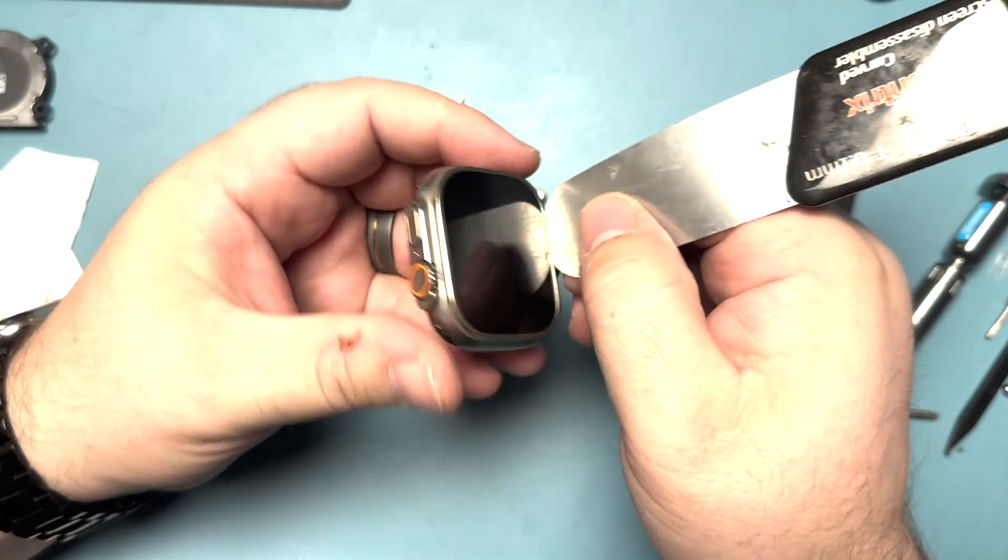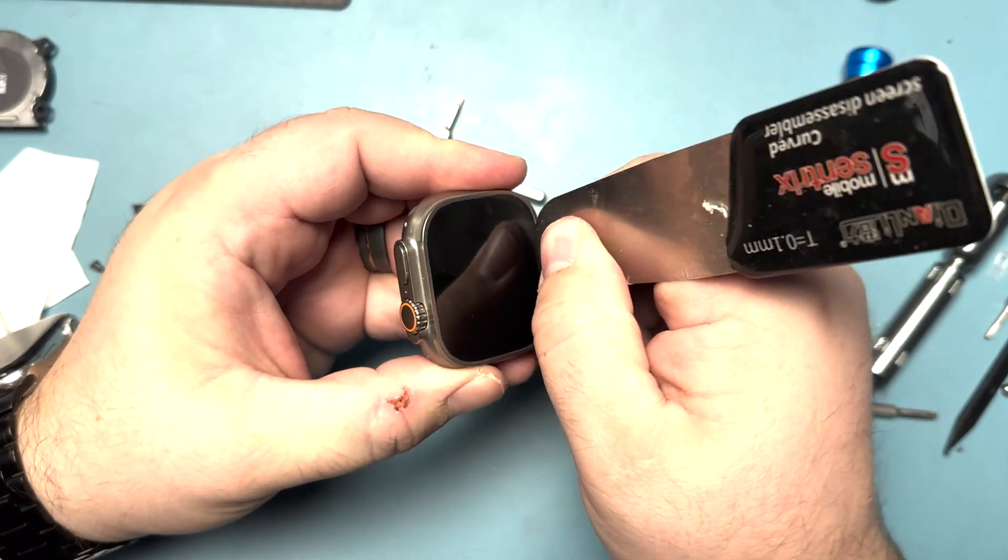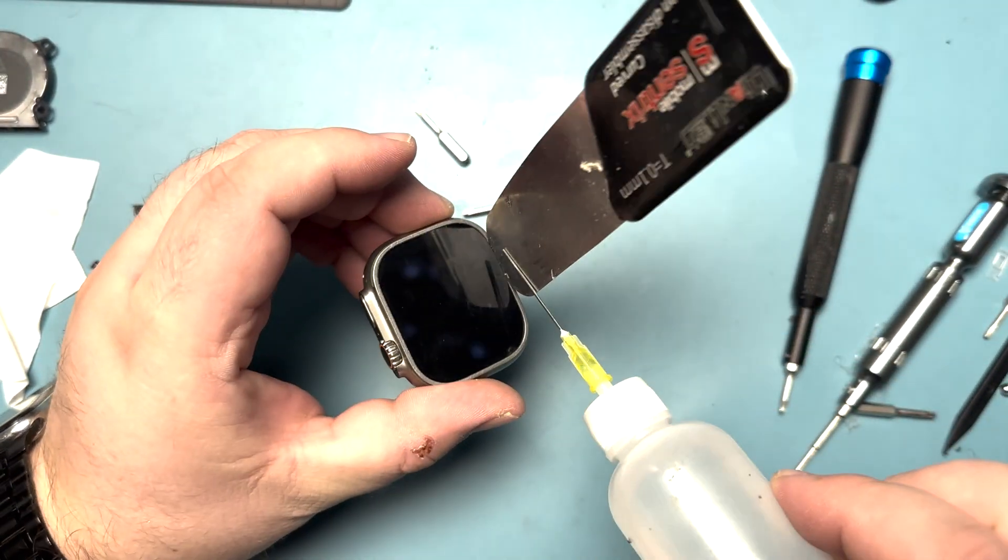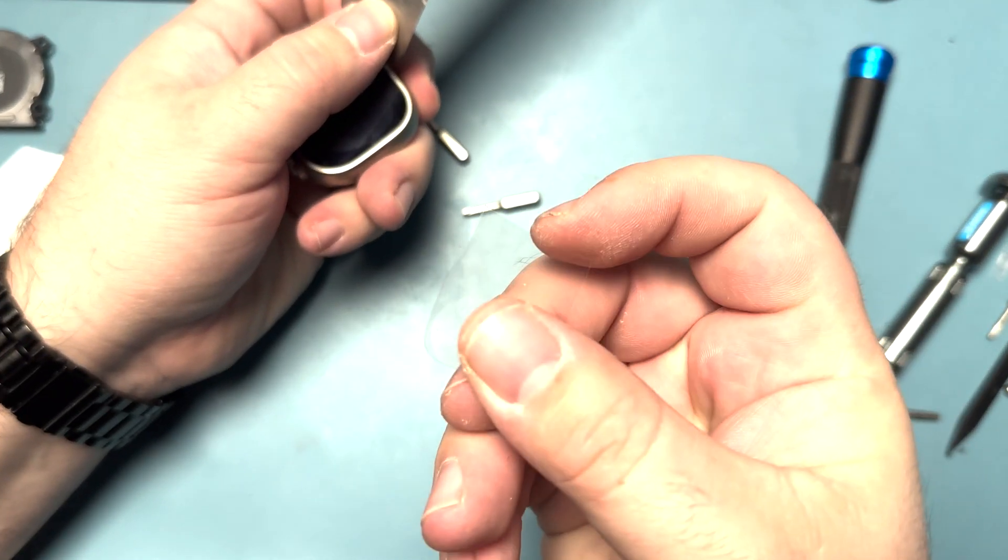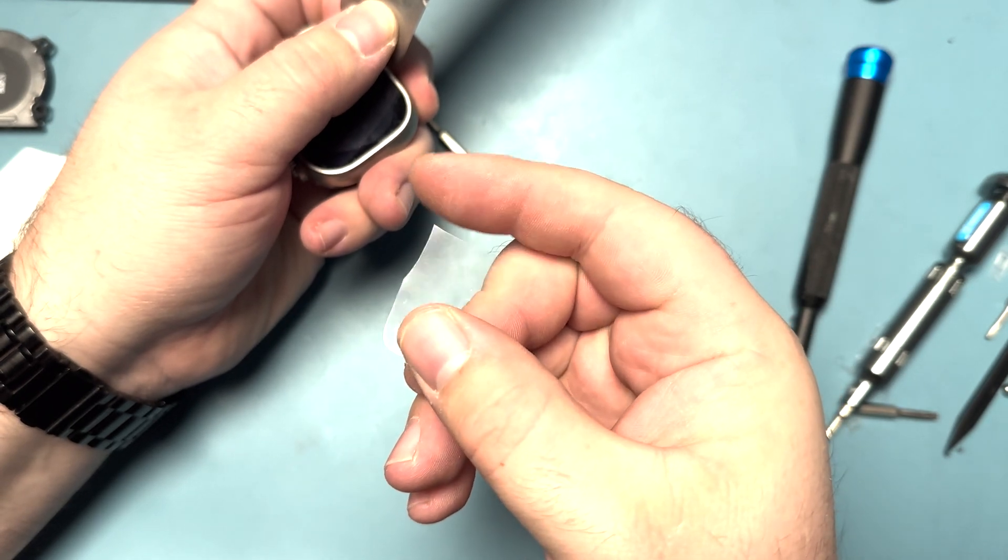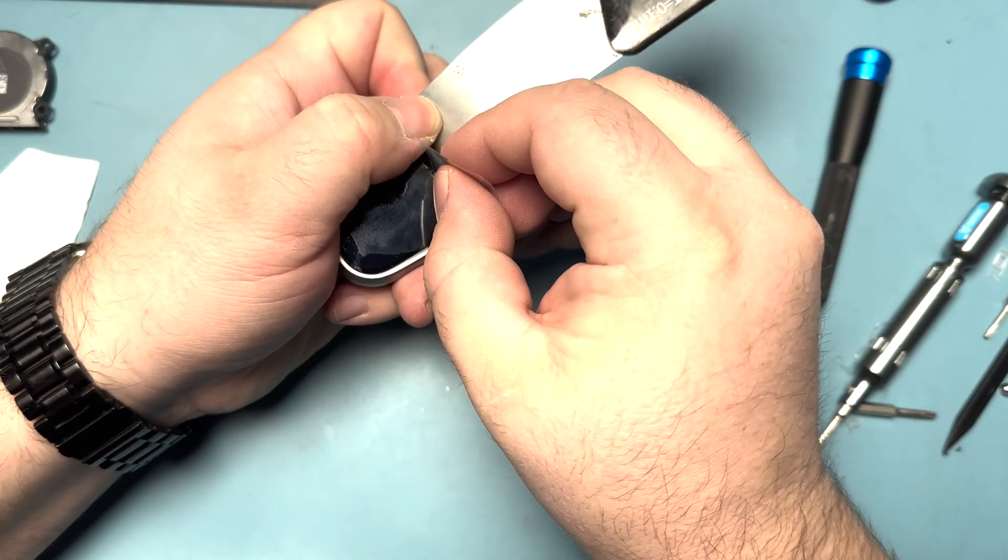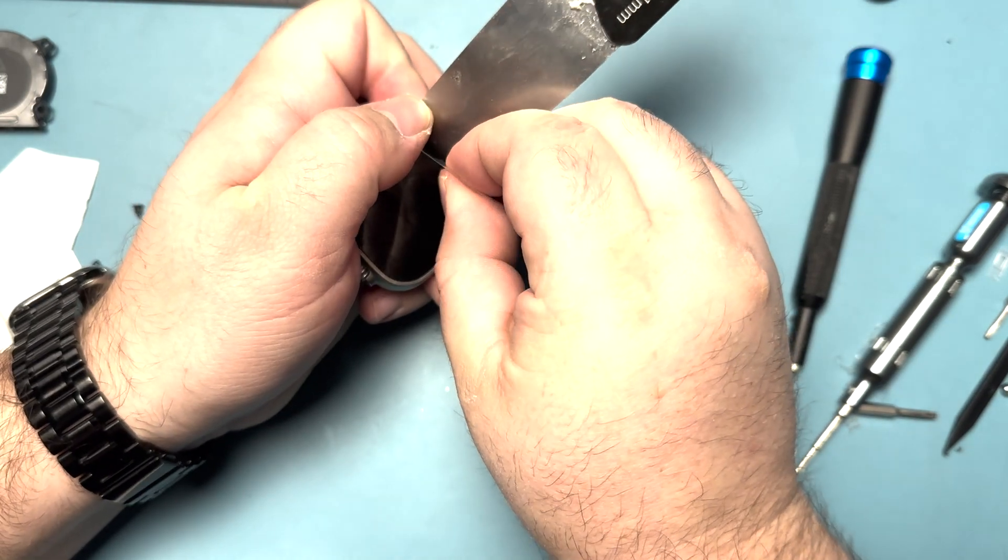Going to take a tool and wedge it down into that tiny gap. Got some isopropyl alcohol that we'll add around the border. Then I'm going to take a piece of plastic with a nice sharp edge that I'm going to use to puncture and pierce through the adhesive on the display by wiggling it back and forth.